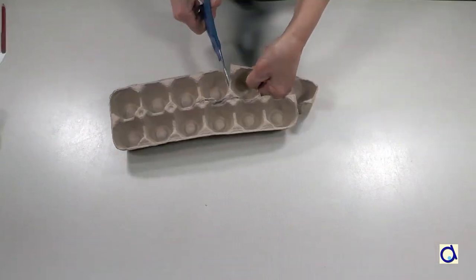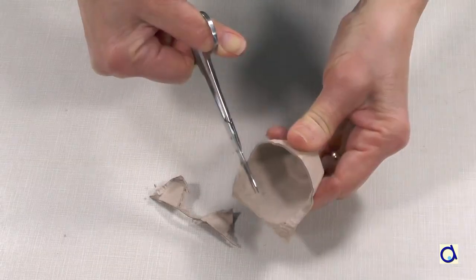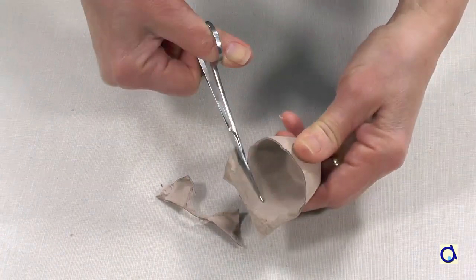Separate the cells of an egg carton with large scissors and then trim the edge of one cell with small scissors.